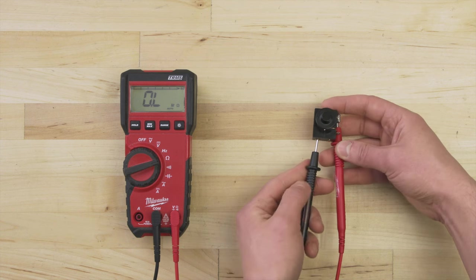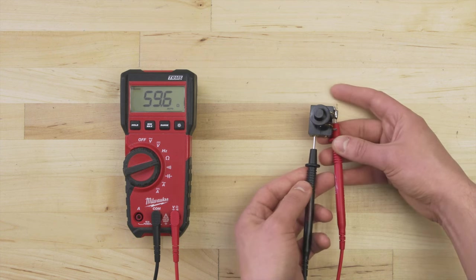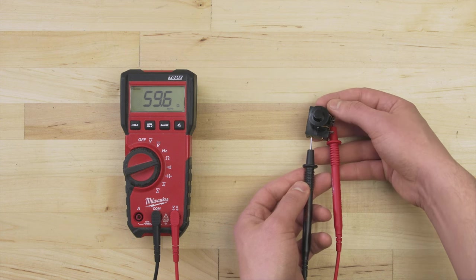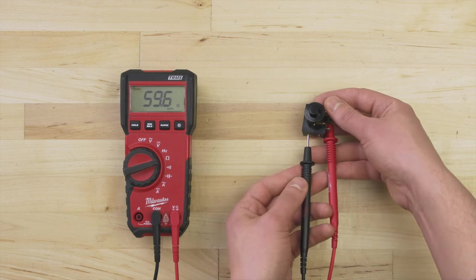When you flip it over, the contacts will close and there should be continuity. If it fails either test, then replace the relay.